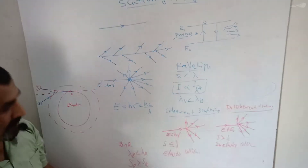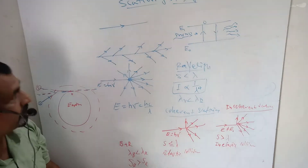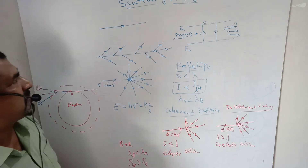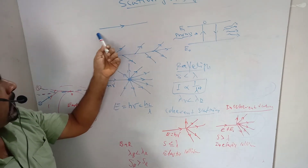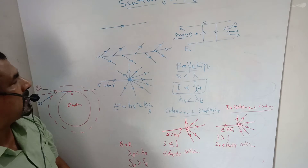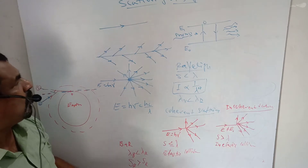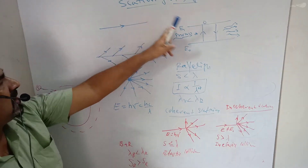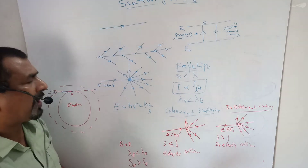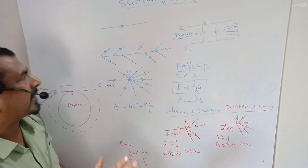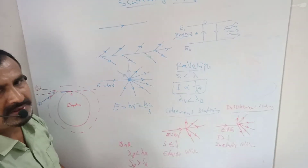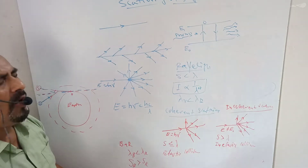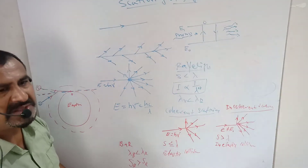Scattering of light. In a homogenous medium, light travels only in one direction — that is, in the direction of propagation of light, but no other directions. This means there is no scattering that takes place in a homogenous medium.